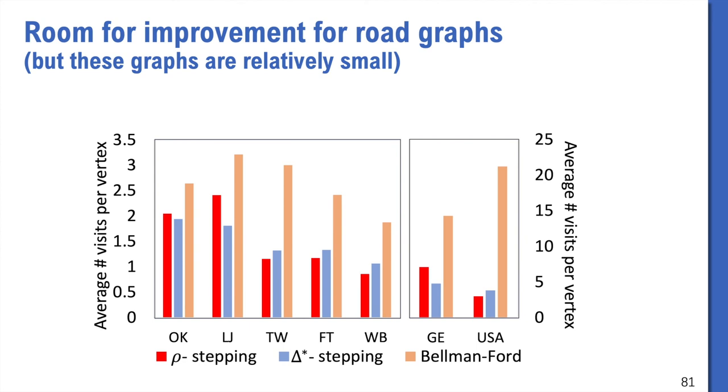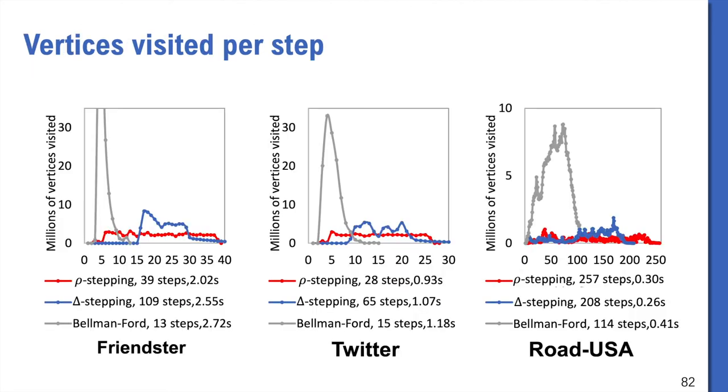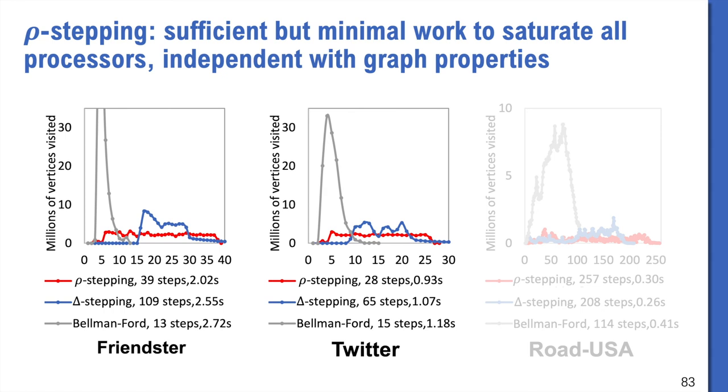However, on road graphs, there still seems to be room for improvement. In this case, delta-stepping has much lower bar here. This is consistent with our parallel running time. To further understand this, we also draw the number of vertices visited in each step in these three stepping algorithms. We can clearly see that on scale-free networks, Rho-stepping visits a very stable number of vertices, so it distributes work more evenly to each step than the other two algorithms. The goal of Rho-stepping is to make work sufficient to saturate the processors but with little redundant work. In this case, controlling a steady number of vertices in each step is a good way to achieve the work-parallelism trade-off.